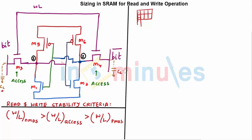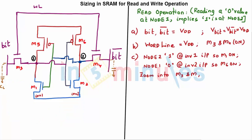Let's focus on the sizing. First, we'll understand the read operation. We want to read a zero value present at node 1. If node 1 is at 0, node 2 is at 1, since they are cross-coupled inverters. The first step for reading is to pre-charge bit and bit-bar to VDD. The second step is to make the word line high, equal to VDD, which turns on M3 and M4.